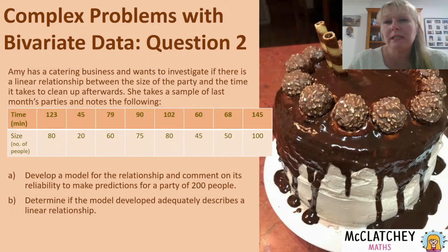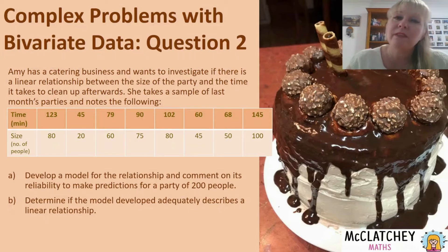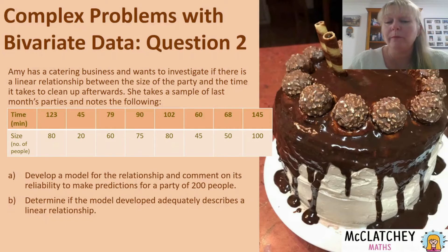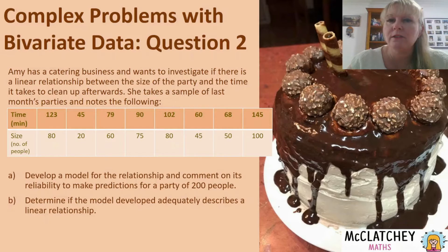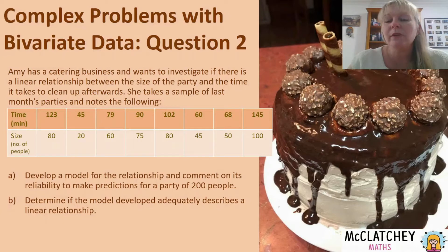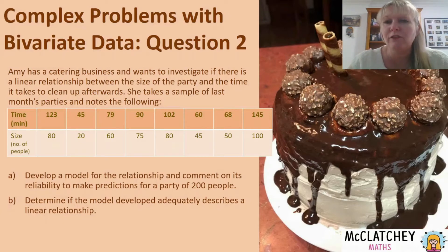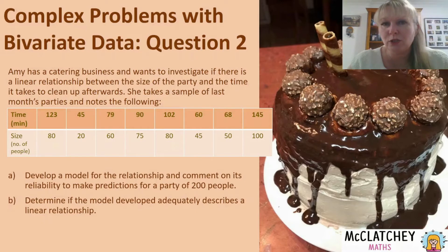This is what we would consider to be a complex unfamiliar question, or even just a complex question. The reason for that is we're not told how to solve the problem, so we need to unpack for ourselves what the question is actually asking and then determine what we need to do to create an adequate solution. In Queensland you would find this in paper two for your external exams, and if you're in Western Australia this would be one of your calculator assumed exams.